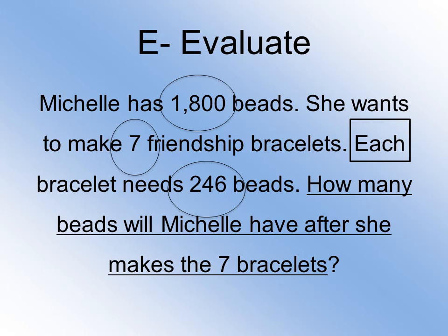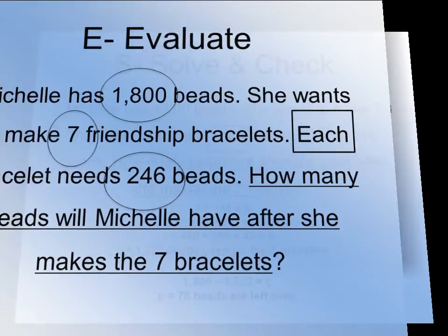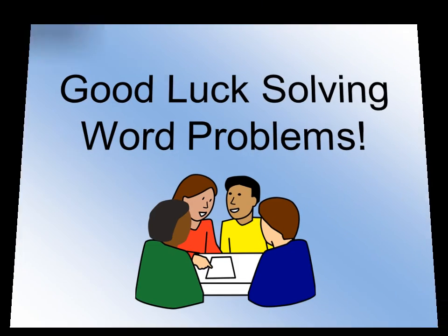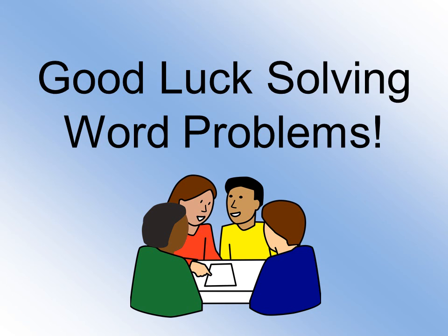I know I need to figure out the total number of beads she needs: 7 times 246. And if she has 1,800 beads, I need to find the difference between those two numbers. I solved the problem: 7 times 246 equals 1,722 beads — those are the beads used for the 7 bracelets. Next, I subtracted 1,800 minus 1,722, which tells me how many beads are left. There are 78 beads left over. So this is the CUBES strategy for solving word problems. I hope you all learned something, and good luck solving word problems!